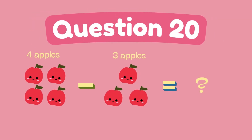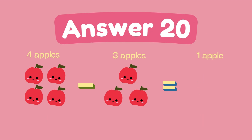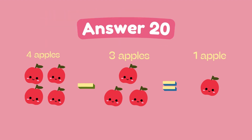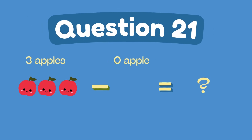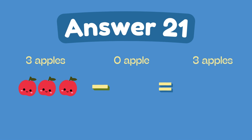What is 4 minus 3? The answer is 1. What is 3 minus 0? The answer is 3.